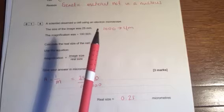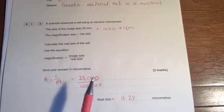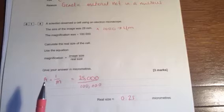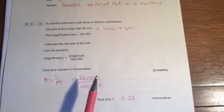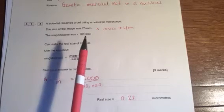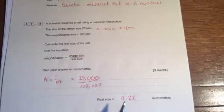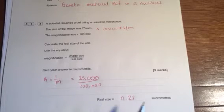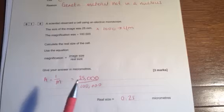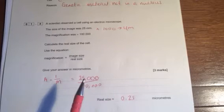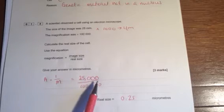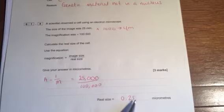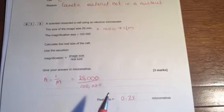So 25 millimeters into micrometers is 25,000. Using our equation A equals I divided by M, our image size is 25,000. Our magnification is 100,000 and you get 0.25 micrometers. If you'd have left this as millimeters that would have knocked you off one mark. So the marks go as follows. One mark for the conversion, one mark for the working, and one mark for the correct answer. So if you don't convert you drop one mark.